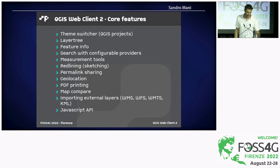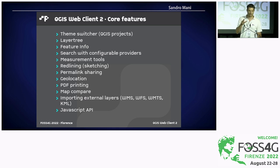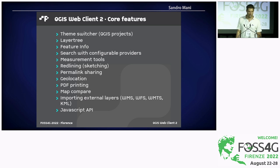The core features include a theme switcher. In the QGIS desktop world they're called projects, but you can have multiple QGIS projects published as themes in the QGIS Web Client. There's a layer tree which reflects the configuration you define in the QGIS project. Feature info works via WMS GetFeatureInfo to display context feature information on a click point. You can define search providers through various means connecting to whatever search provider you may need.